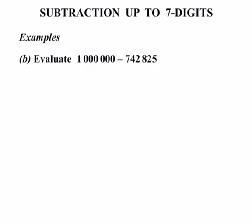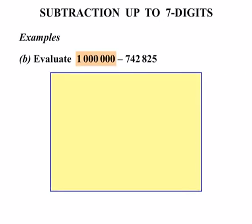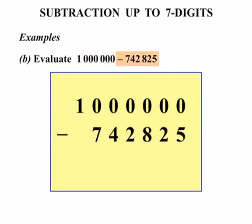Now this next one here, evaluate 1,000,000 minus 742,825. Well, a bit of a working out space now. I deliberately chose a question with lots of zeros because a lot of people have major problems with them. I'm going to show you a very simple technique. So let's put our 1,000,000 down. We're subtracting that number. Let's write that down. And here we go.